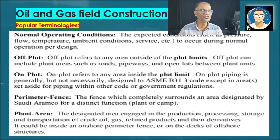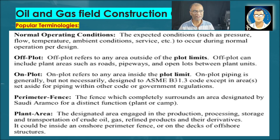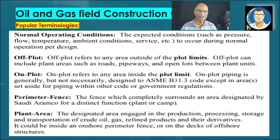Normal operating conditions are the expected conditions — such as pressure, flow, temperature, ambient conditions, and service — that occur during normal operation per design. Off-plot means the area outside the plot limit, which can include plant areas such as roads, pipeways, and open lots between plant units. On-plot means the area inside the plot limit. On-plot piping is generally process piping designed to ASME B31.3, but pipeline portions entering the plant area can follow B31.4 for liquid or B31.8 for gas transportation.